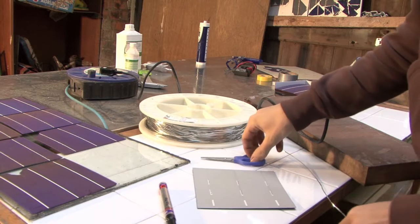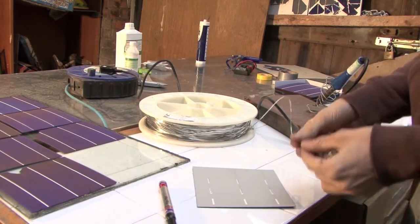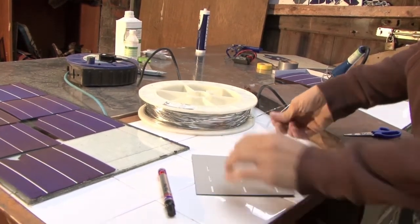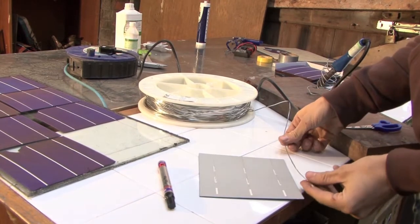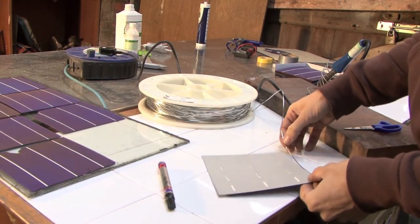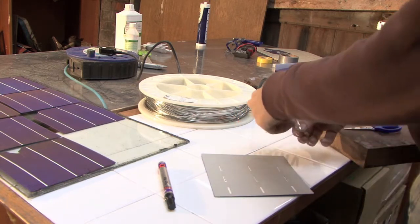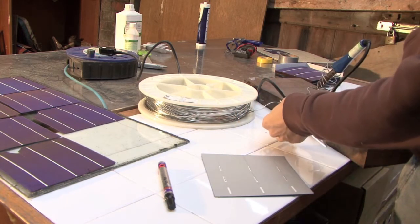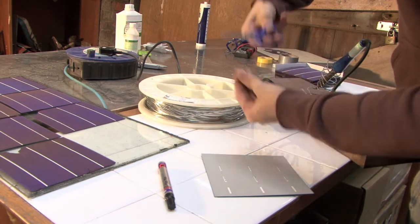What we're going to do is cut a piece of tabbing wire that's twice the length of the cell. So that's easy to do. I just get it, fold it over, and then cut there like that.